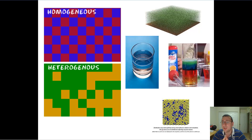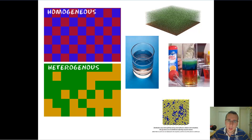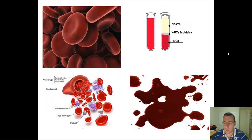A homogeneous mixture — 'homo' means the same. It's the same everywhere; no matter where you look, you're going to see the same thing. A heterogeneous mixture, on the other hand, is going to be different depending on where you look.